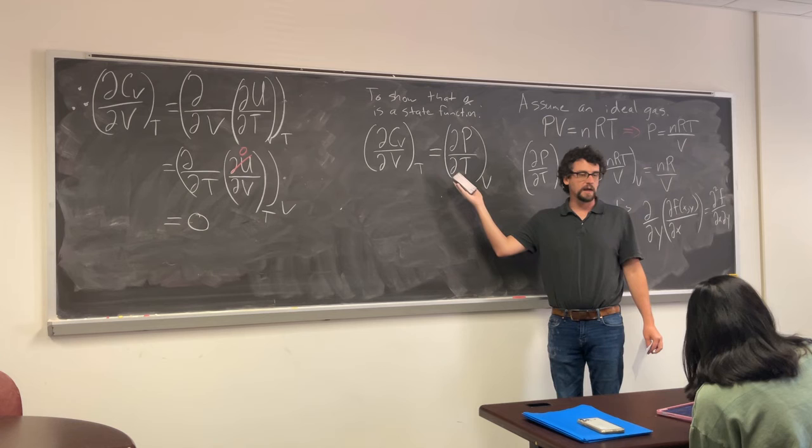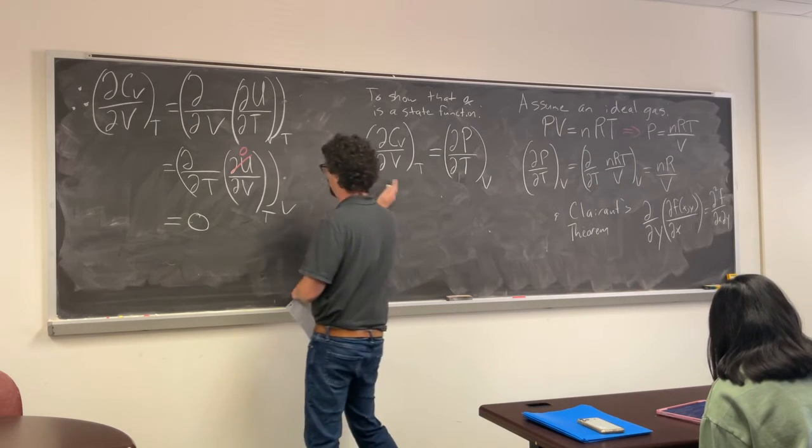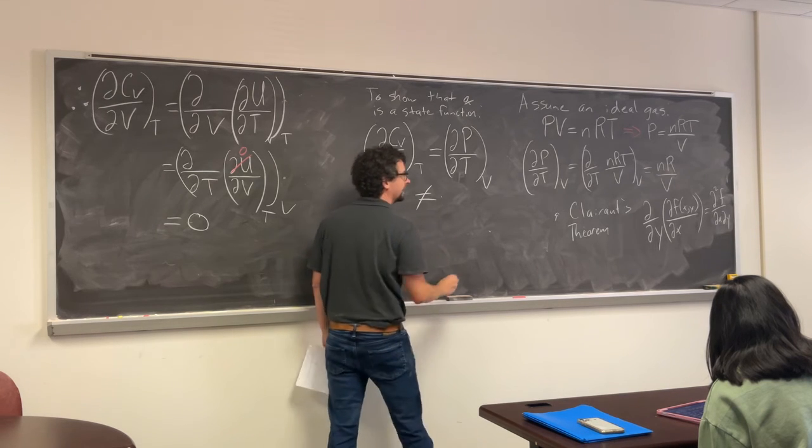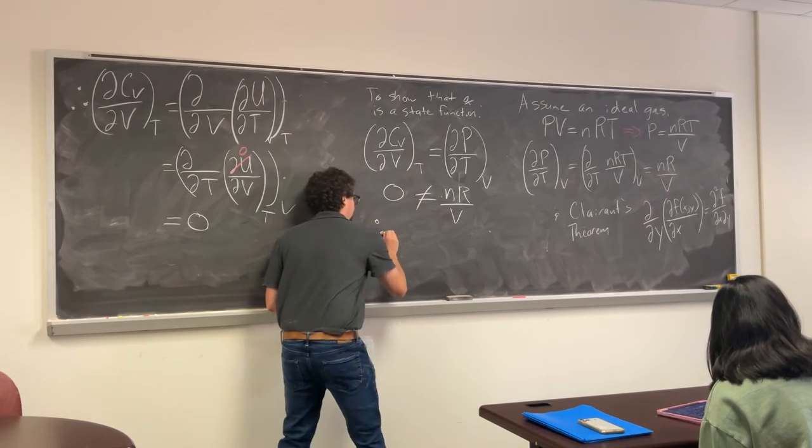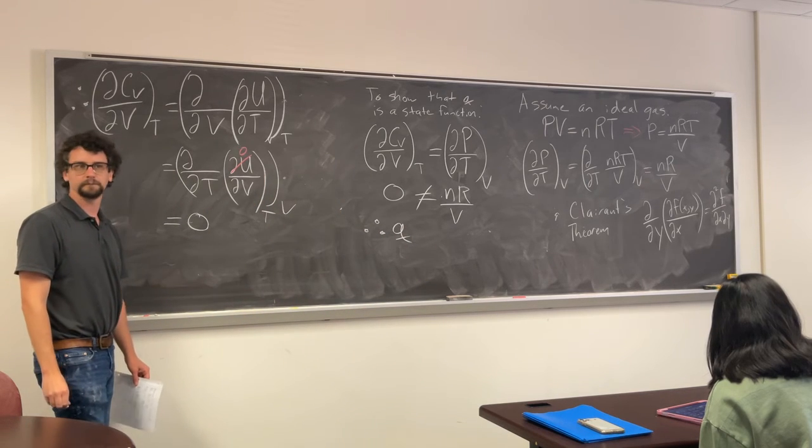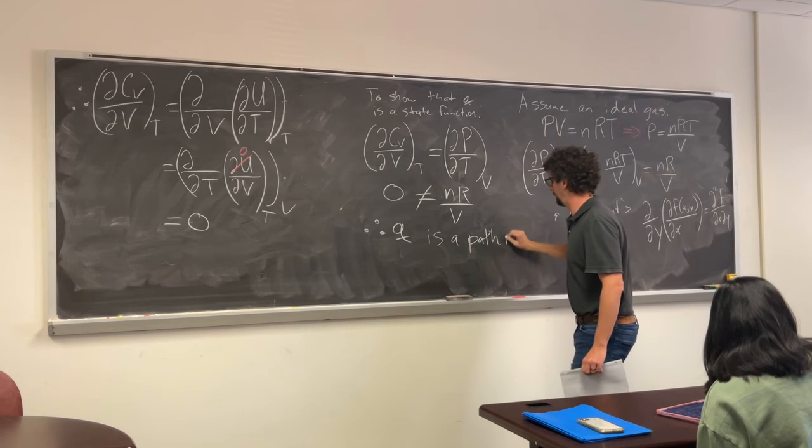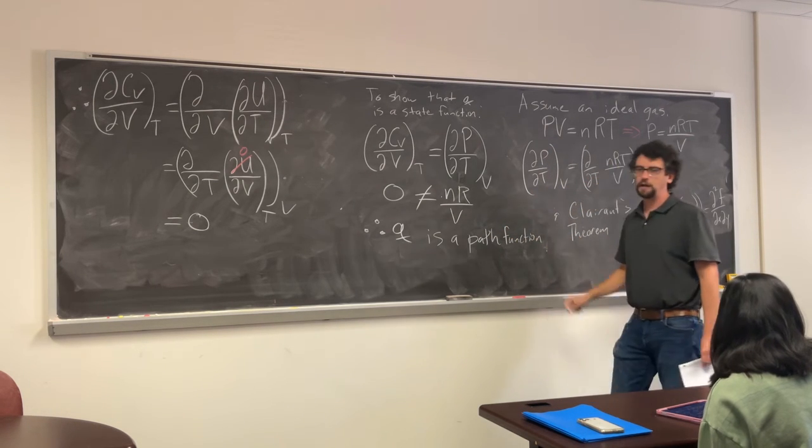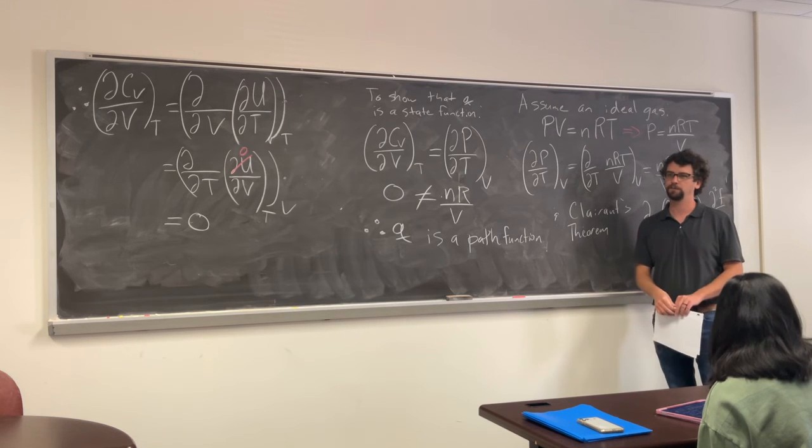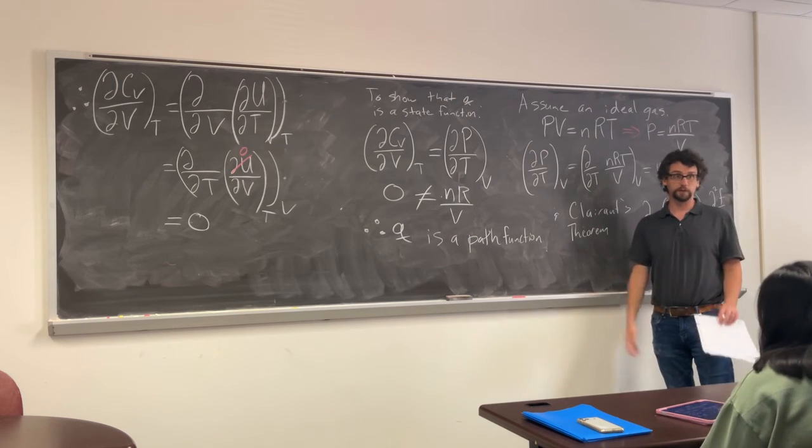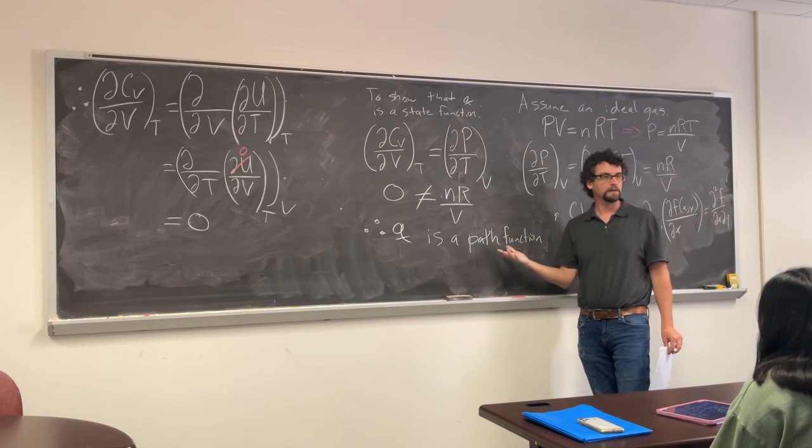This was our goal. We were trying to show that these things are equal to one another. Are they? No, this bit over here does not equal nR over V. Therefore what type of function is Q? We have two types of functions. If you do this exact same thing and you divide by T, it suddenly becomes a state function.